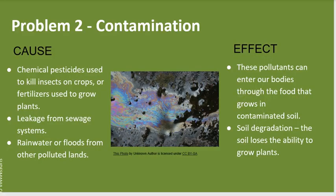Problem two: contamination. Here are some causes of contamination. First, chemical pesticides used to kill insects on crops, or fertilizers used to grow plants, can cause contamination of the soil. Another cause is leakage from sewage systems that can seep into the soil. A third cause is rainwater or floods from other polluted lands. Effects: these pollutants can enter our bodies through the food that grows in contaminated soil. Another effect is soil degradation — the soil loses the ability to grow plants because it doesn't have any good nutrients in it.